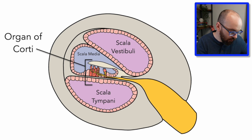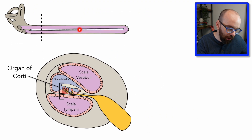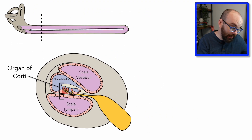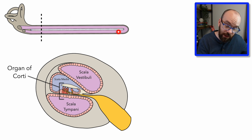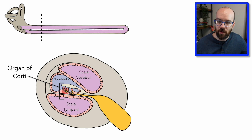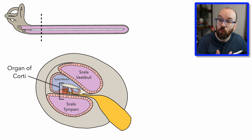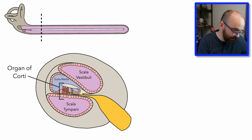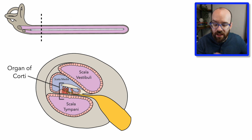The organ of Corti extends down the whole length of the cochlea. If it gets stimulated at the beginning, those are high-frequency sounds; if stimulated at the end, those are low-frequency sounds. Whenever vibrations produce a standing wave in the cochlea, that pushes down on the tectorial membrane and stimulates the hair cells.